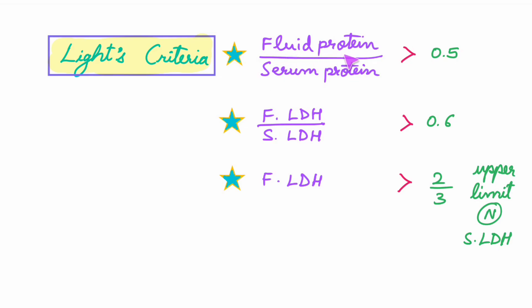Pleural fluid protein upon serum protein should be more than 0.5. Pleural fluid LDH upon serum LDH more than 0.6. Pleural fluid LDH more than 2/3 of the upper limit of normal serum LDH. So this is Light's criteria.